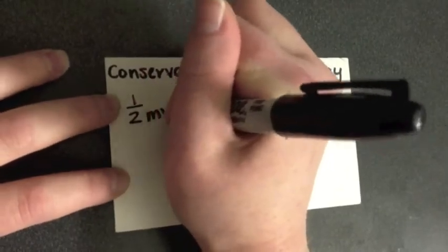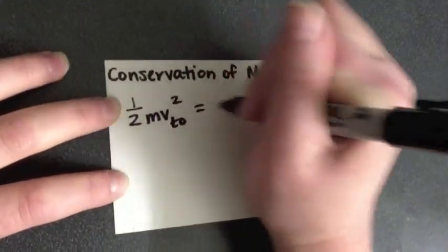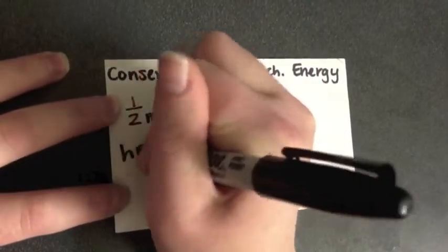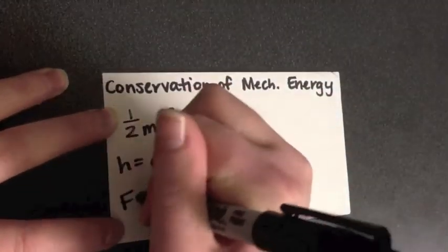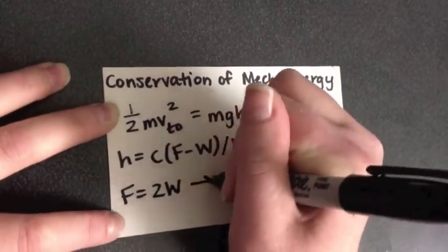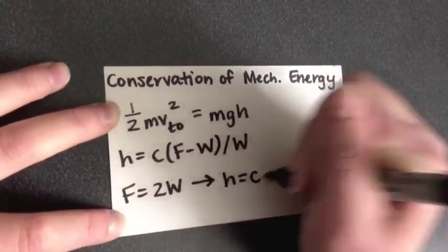Once we leave the ground, we can use the conservation of mechanical energy to determine our maximum height. This shows that we can raise our center of mass as much as we crouch. So if I crouch 40 centimeters, I can go up from standing position to 40 centimeters up.